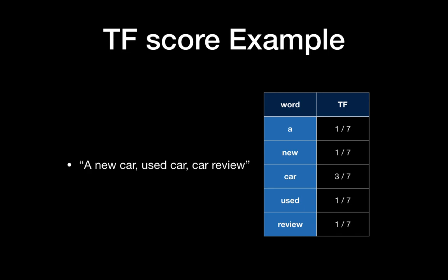Here is an example. The input sentence is 'a new car used car car review.' We can use the TF score — meaning how many times a word occurred in the document. We have seven words total. 'A' appears once, so its TF score is 1/7. 'New' also has a score of 1/7. 'Car' appears three times, so its TF score is 3/7. The other words each score 1/7. So 'car' is the most informative word in this document.